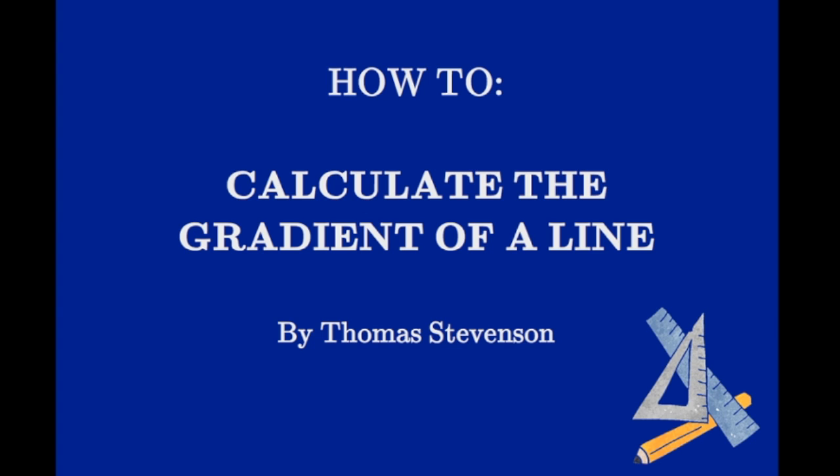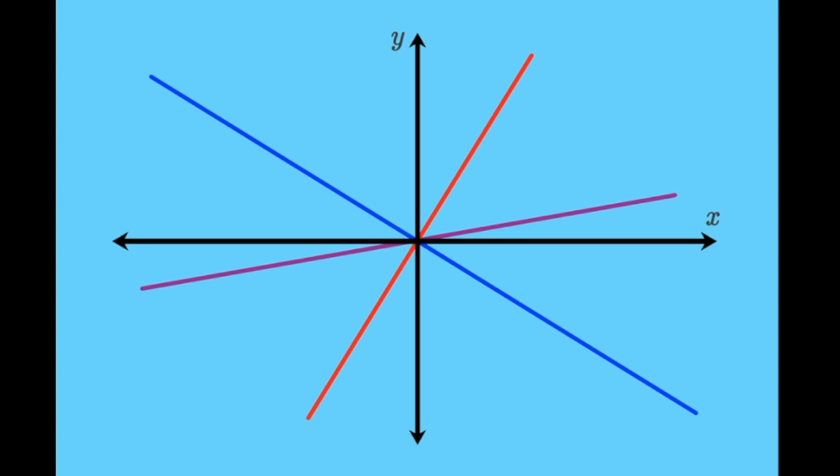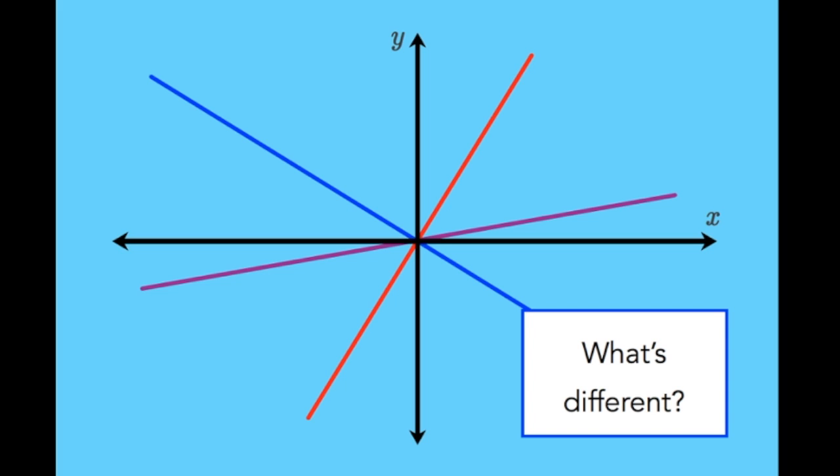Today we're going to look at something called the gradient. Here are three linear graphs. You can tell they're linear because they all have the shape of a straight line. The arrows here are the X and Y axes of a Cartesian plane, so all three lines have been plotted on the same plane. What's different between the three lines? I'll give you a couple of seconds to think about it.